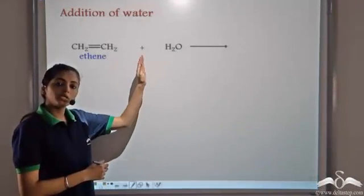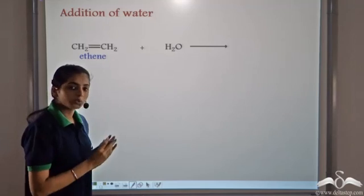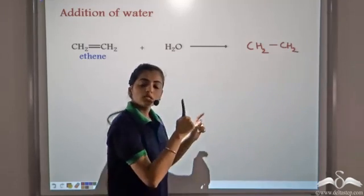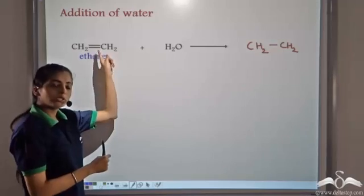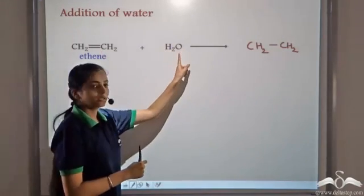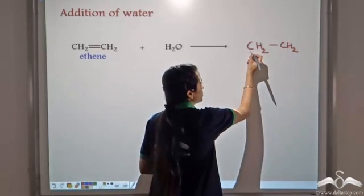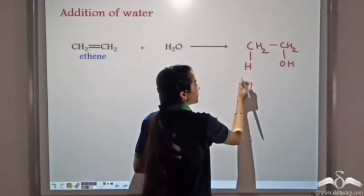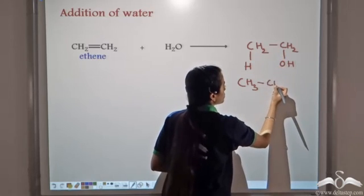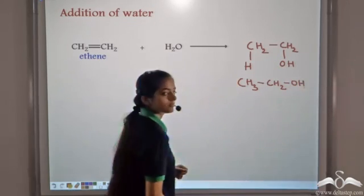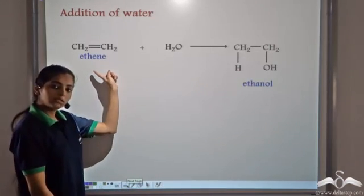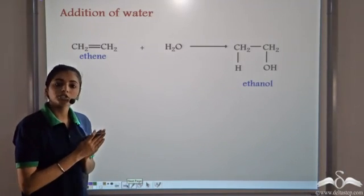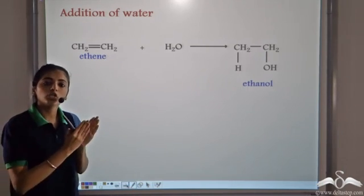When ethene is made to react with water, it again gives an addition reaction. We have CH₂=CH₂; since it is giving an addition reaction, the double bond breaks into a single bond, and water — made up of H and OH — splits so that the hydrogen atom attaches to one carbon and OH to the other. We get CH₃CH₂OH, which is ethanol. So on reaction of alkenes with other compounds, addition reactions occur because unsaturated compounds always tend to become saturated.